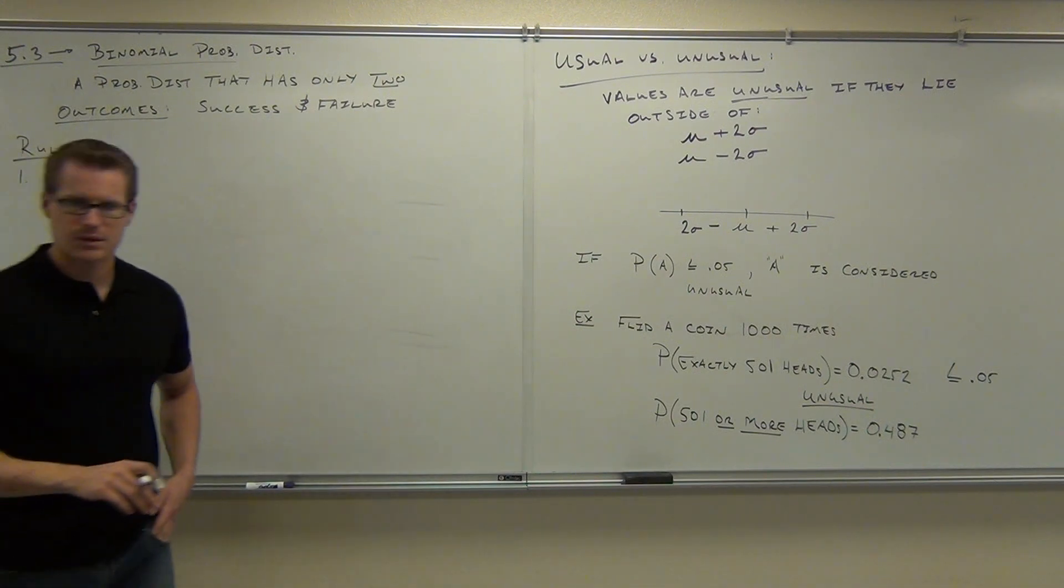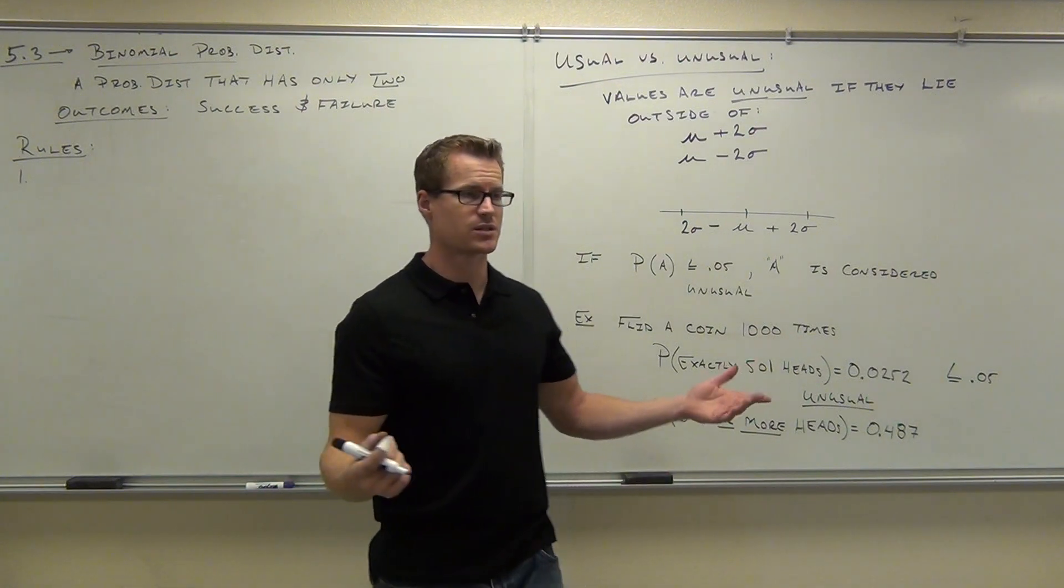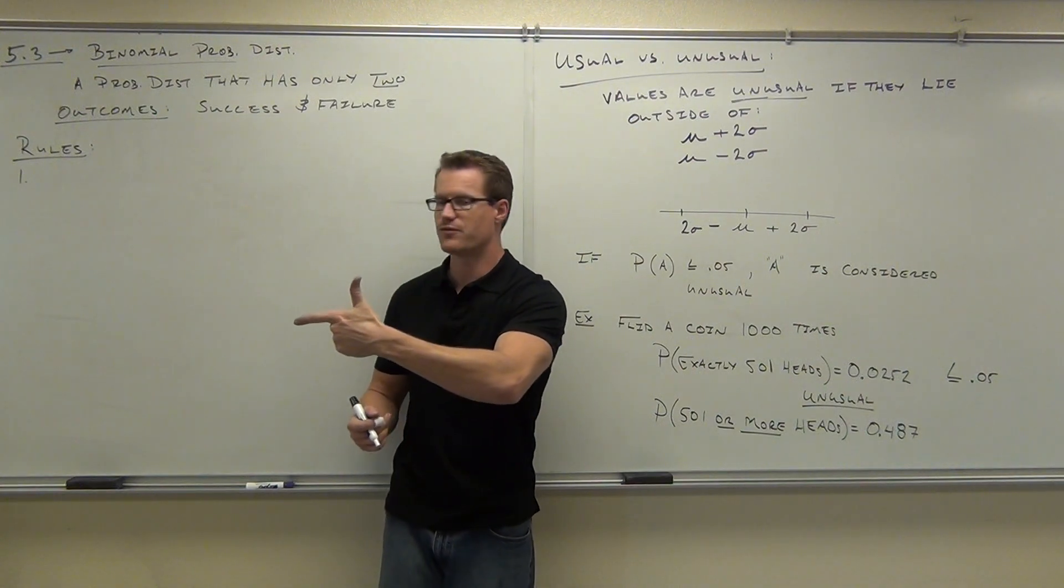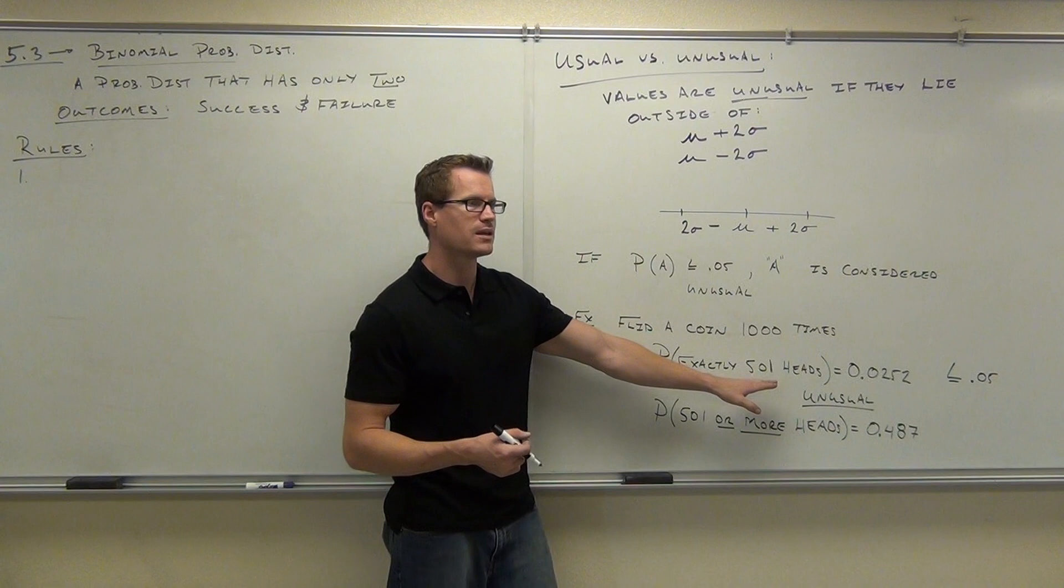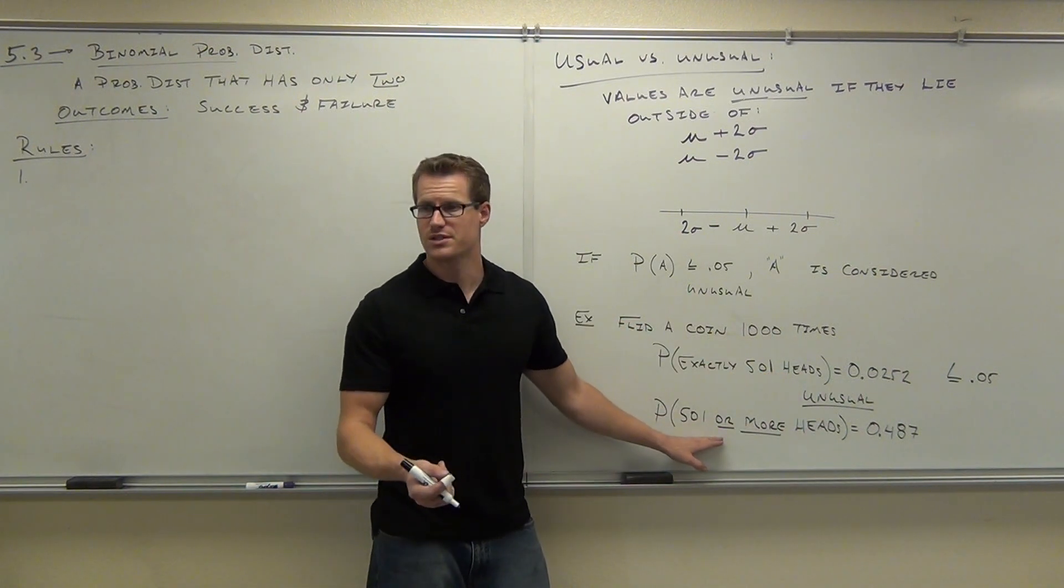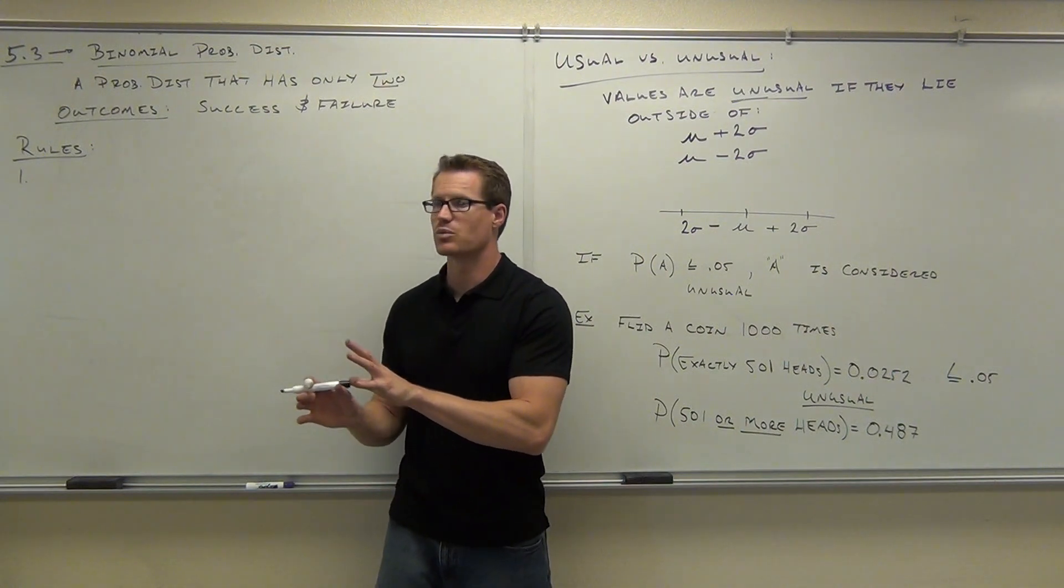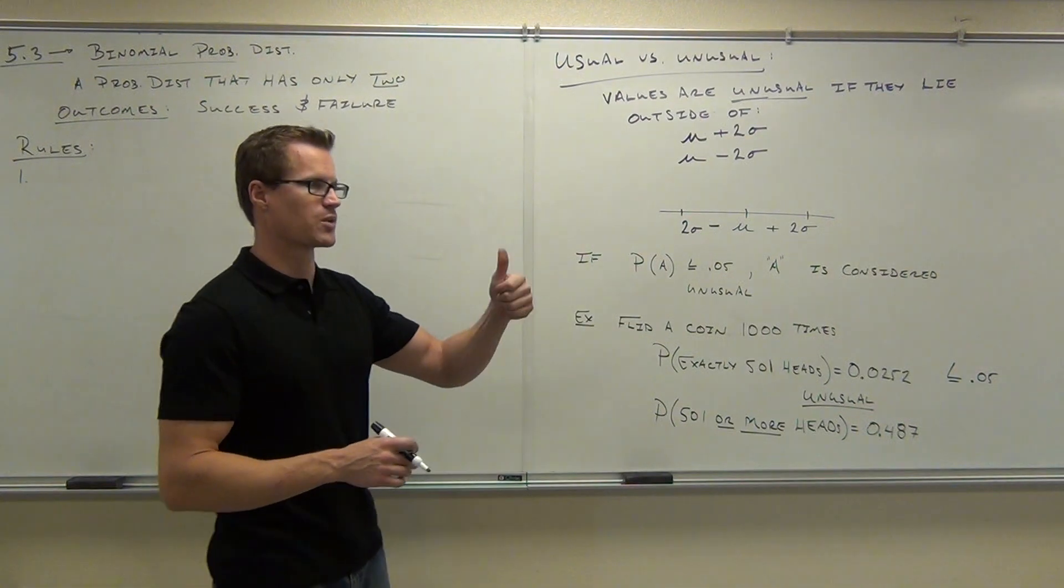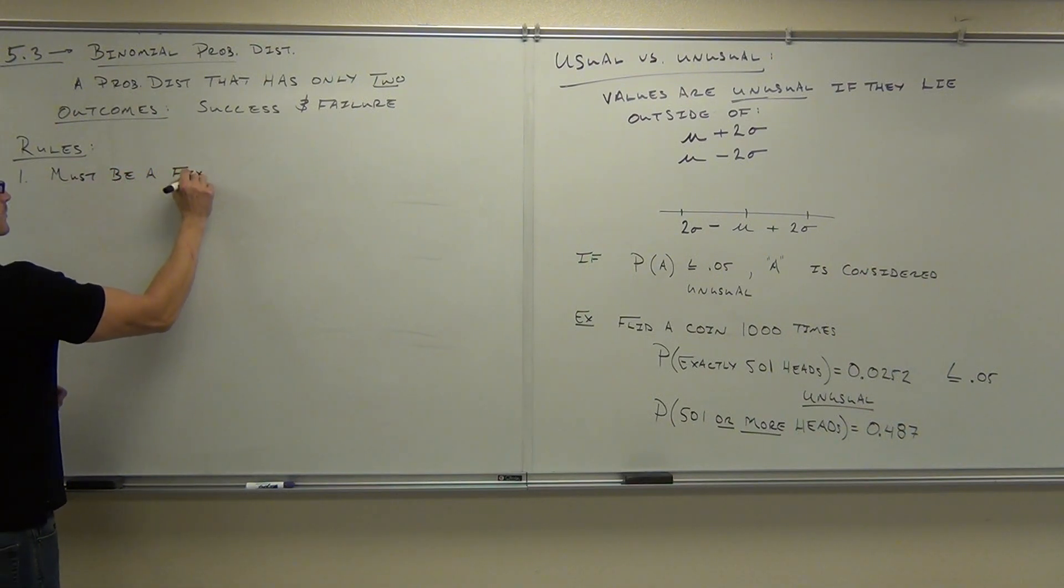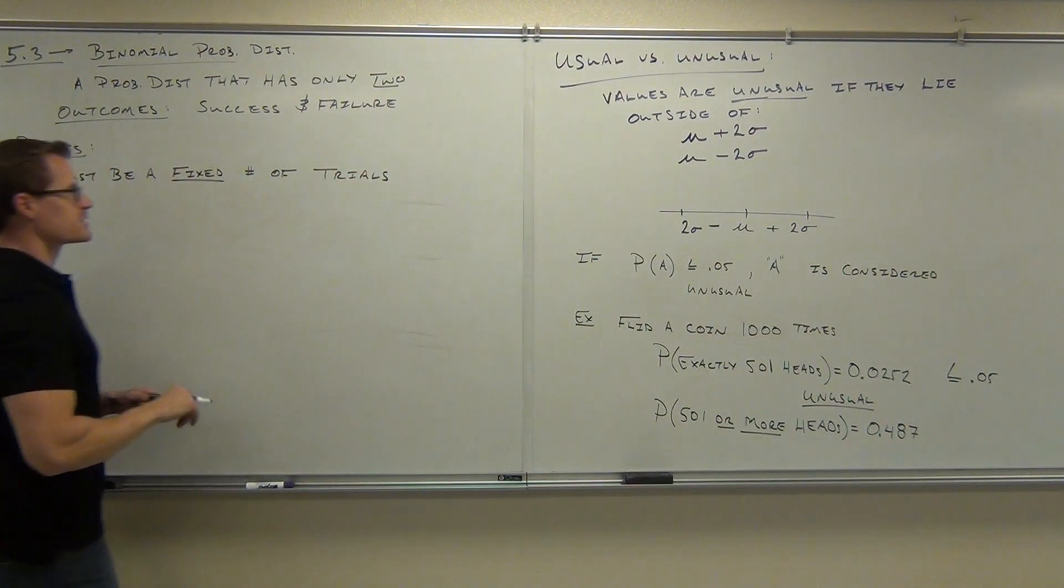Here's the rules for this thing. First rule: you have to have a fixed number of trials, which means you can't do this procedure for eternity. It's got to end somewhere. For instance, this was a binomial distribution idea - you're flipping a coin looking for heads. Heads would be a success, tails would be a failure. In this case we were looking for exactly 501 successes out of how many tries? 1,000. That would be our trials. We had to fix that somewhere so we can work with our problem. Number one, you have to have a fixed number of trials. You can't just flip the coin forever.